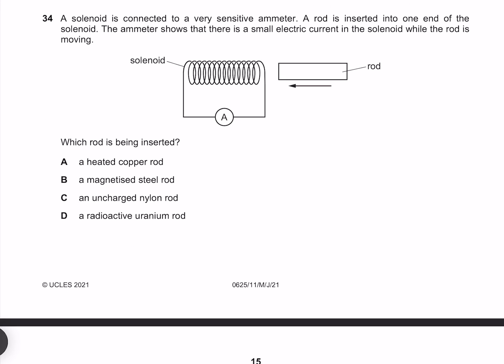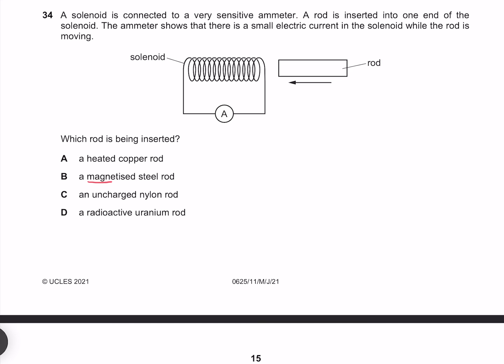A solenoid is connected to a very sensitive ammeter. A rod is inserted into one end of the solenoid. The ammeter shows that there is a small electric current in the solenoid while the rod is moving. Which rod is being inserted? The situation here is electromagnetic induction, which as the name suggests, requires that the rod be magnetic. So our answer is B.